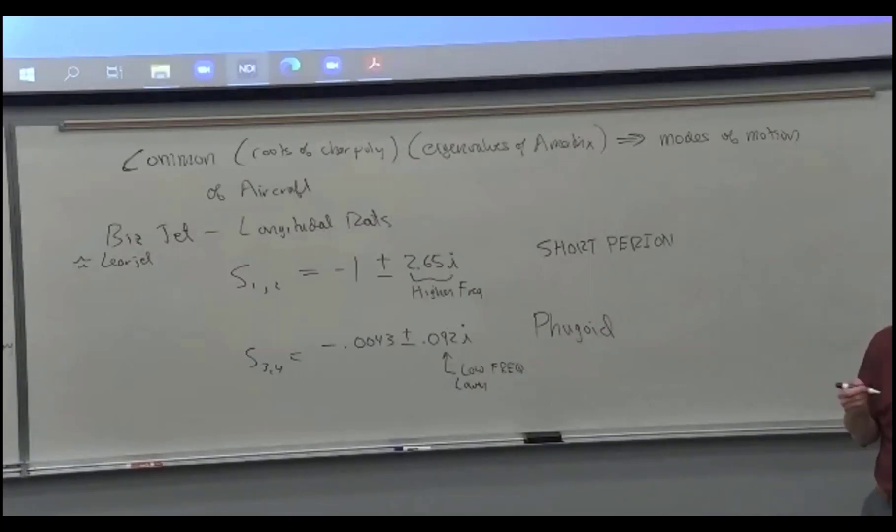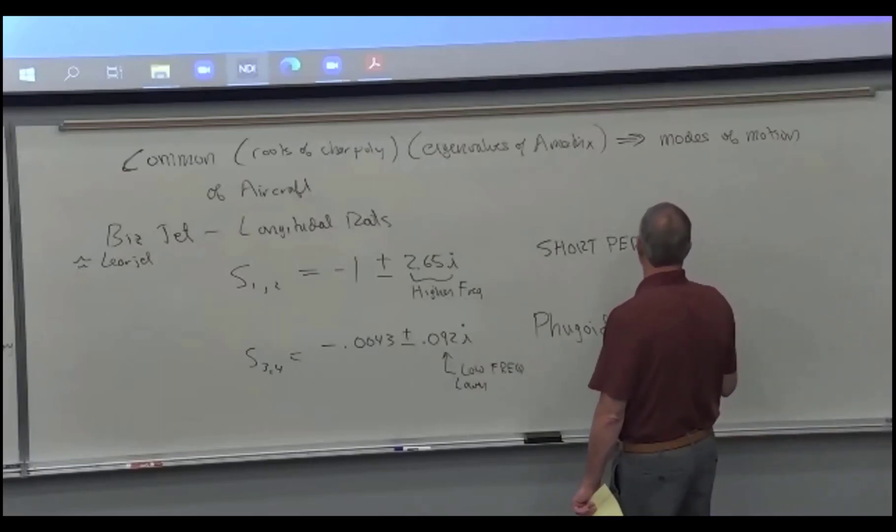So they said, well, this one's shorter compared to this. Maybe they should have called it the shorter period, and they could have called this the longer period. But they called this Fugoid a long time ago, and it stuck. You can do this yourself. If you invent something or some kind of analysis, you can name it whatever you want. You can name it after yourself. Usually, if things get named after people, it's because other people start using it and associate it back with that person.